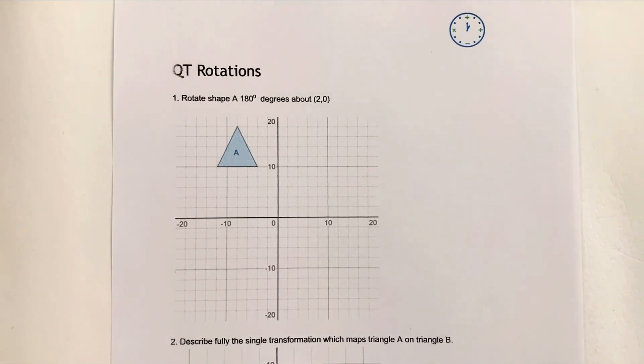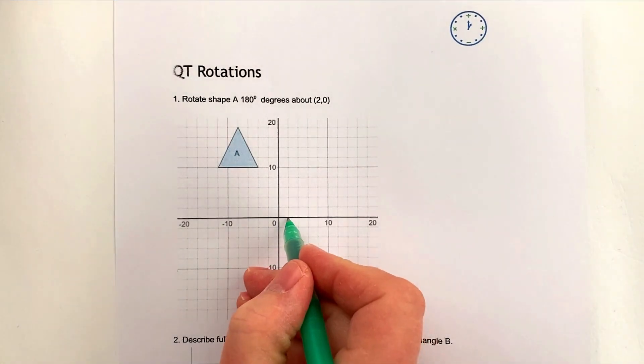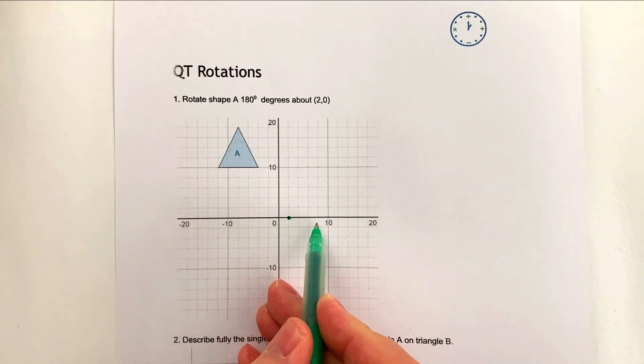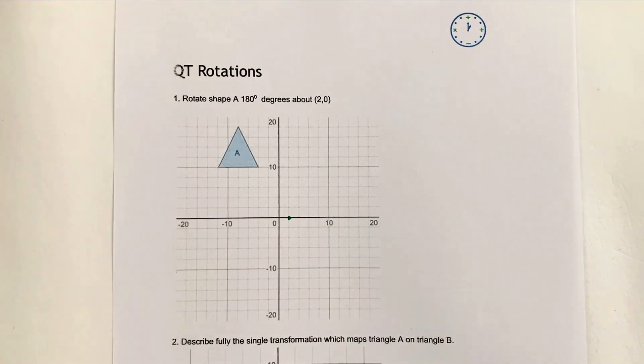Hi, this is the final video in the playlist where we're looking at, in this particular case, rotations and the whole playlist looks at transformations on XY graphs. So this one here is rotate shape A 180 degrees around the point (2,0). So the point (2,0) is going to be here. Now we're just going to be very careful because each of these units is actually two jumps.